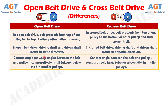Number 3: the contact angle, or wrap angle, between the belt and pulley is comparatively small in open belt drive, always below 180 degrees in the smaller pulley, whereas in crossed belt drive the contact angle between the belt and pulley is comparatively large, always above 180 degrees in the smaller pulley.